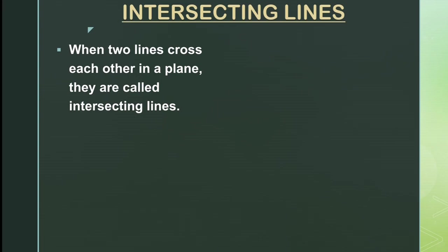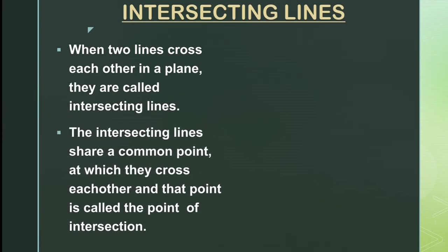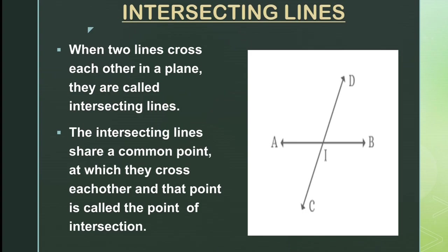Next, intersecting lines. When two lines cross each other in a plane, they are called intersecting lines. The intersecting lines share a common point at which they cross each other, and that point is called the point of intersection. As you can see in the figure, AB and CD are two intersecting lines and they cross each other exactly at the point I. So I is called the point of intersection.